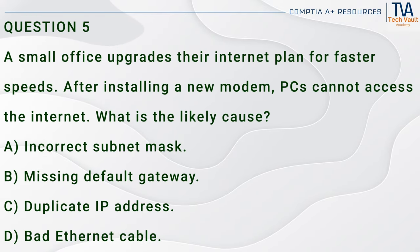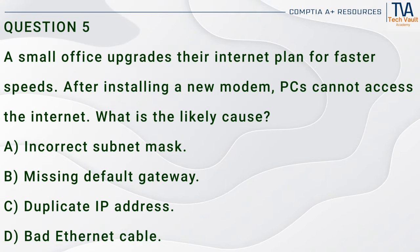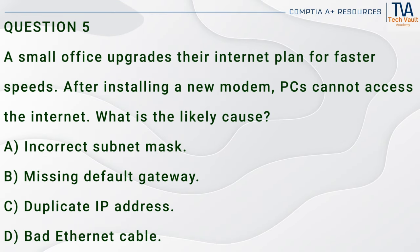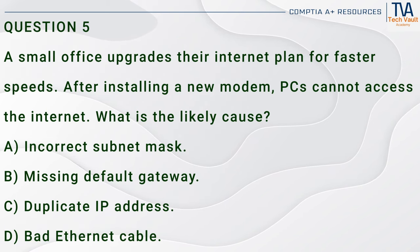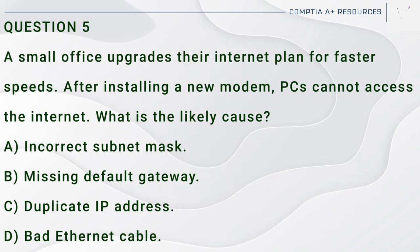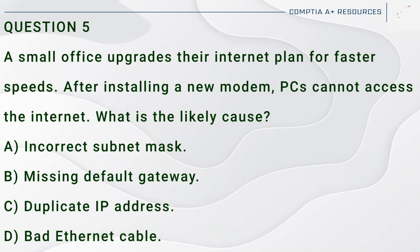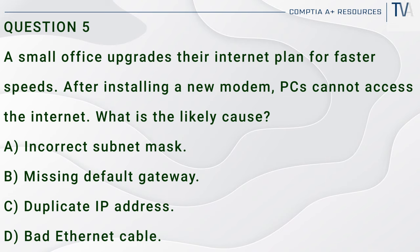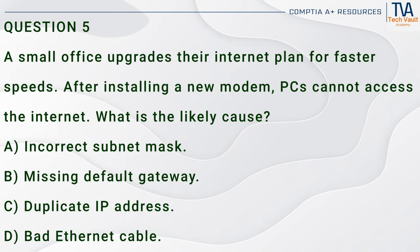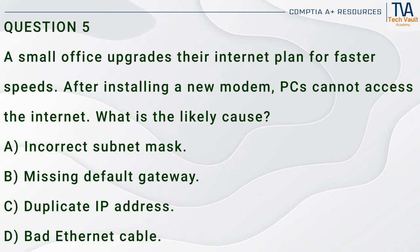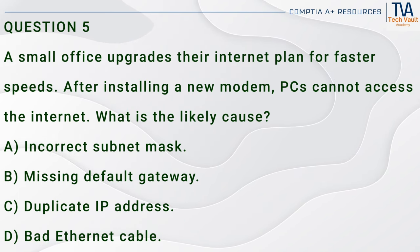Question 5. A small office upgrades their internet plan for faster speeds. After installing a new modem, PCs cannot access the internet. What is the likely cause? A. Incorrect subnet mask. B. Missing default gateway. C. Duplicate IP address. D. Bad Ethernet cable.